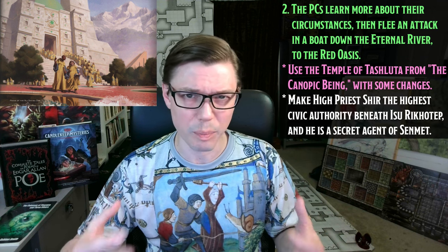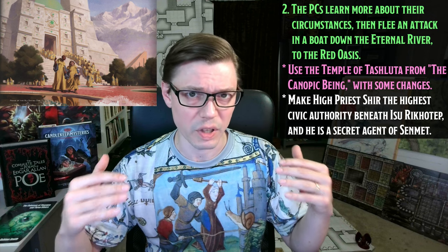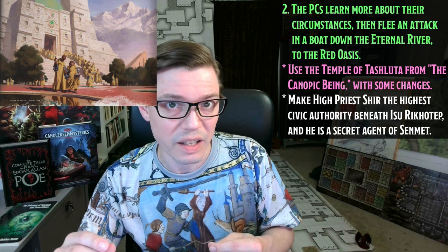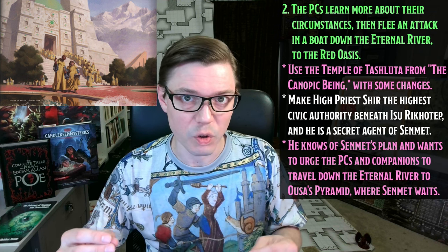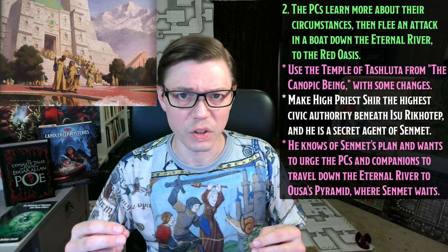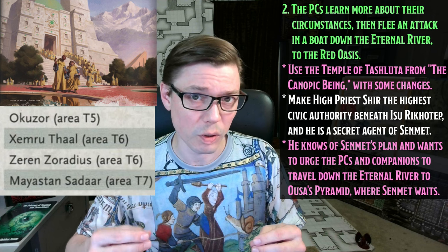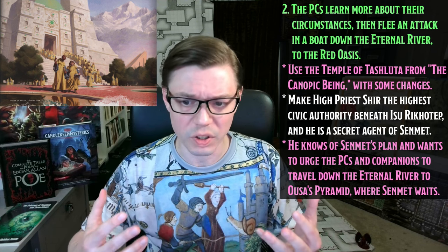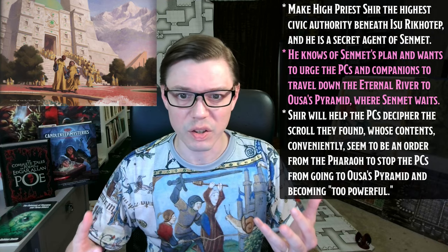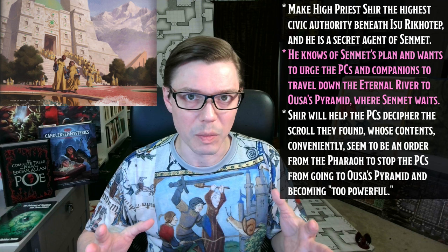In Act 2, Muhar is a small but busy village mostly centered around a temple. We're going to use the Temple of Tashluta from the Canopic Being and Candlekeep Mysteries here, with a change so that Priest Shir is the highest civic authority beneath High Priestess Rikhotep — and he is a secret agent of Senmet against the pharaoh. He is well aware of Senmet's efforts to acquire adventurers as ingredients in Canopic Golems, and is eager to send the adventurers towards Senmet in the Pyramid of Ussa. We're going to change the plot so that the named NPCs actually correspond to the ones the PCs in the original adventure were supposed to be finding.